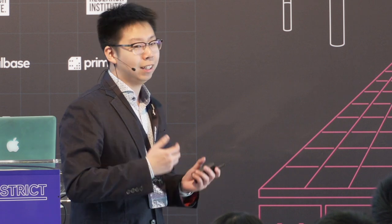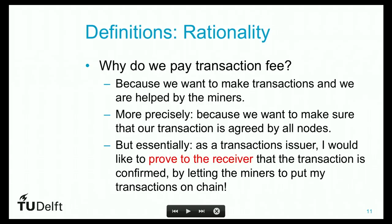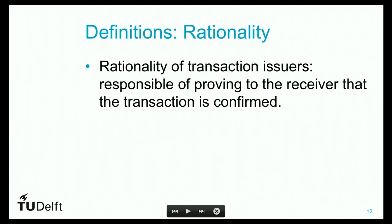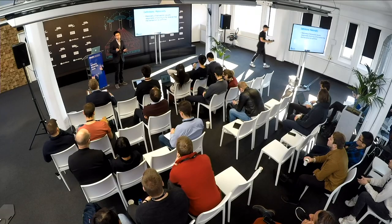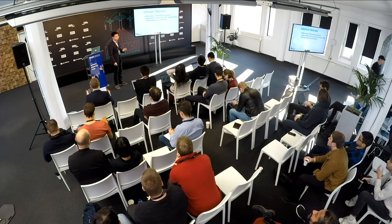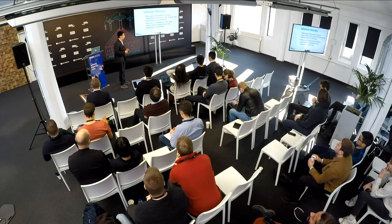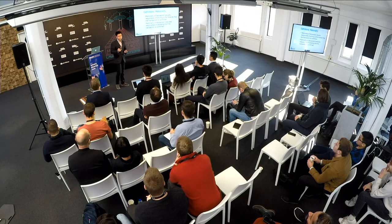There is a rationality: when dealing with value, as a transaction issuer, I am responsible for providing proof that my transaction is confirmed. I do that through the miner — I send transaction fee to the miner, the miner puts that on chain, and then I send the chain as proof to David saying my transaction is confirmed. David then checks the chain and sees the transaction is indeed confirmed. So as a transaction issuer, I should take responsibility of sending proof that my transaction is confirmed. And as a receiver, David should also check that my transaction is confirmed.